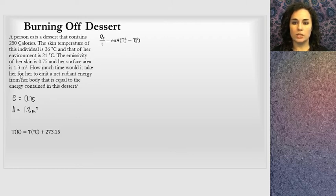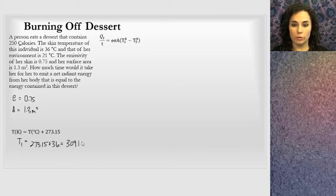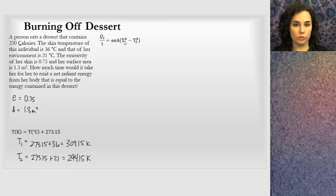It asks, how much time would it take for her to emit a net radiation energy from her body that is equal to the energy contained in the dessert? How long would it take to burn this off as temperature into the environment? Let's convert the temperatures. T1 will be the hot: 273.15 plus 36, which equals 309.15 Kelvin. T2 is the colder one: 273.15 plus 21, which will be 294.15 Kelvin. So we have those to go into the equation.